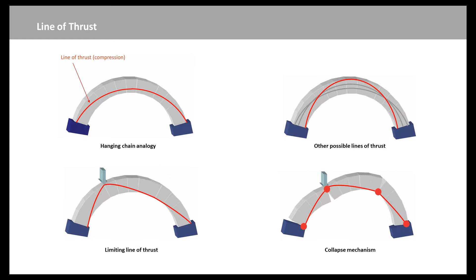Unless you know something about the history of your arch and the materials of which it's formed, you can't categorically say how your bridge is actually carrying the load. However, if you apply, for example, a load at quarter span, and you keep increasing that load, there comes a point where you can only just fit the profile of the line of thrust inside the masonry.